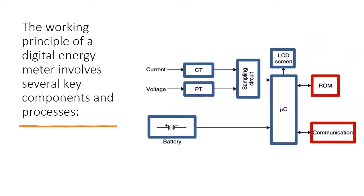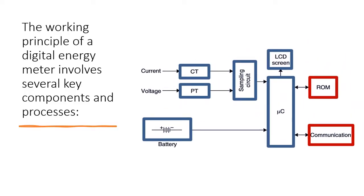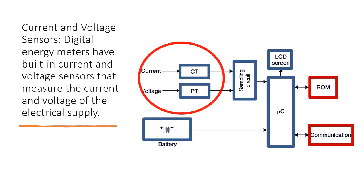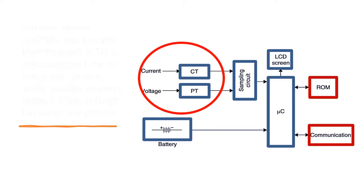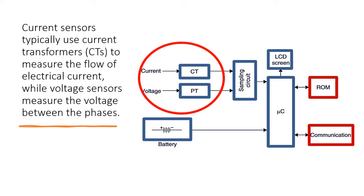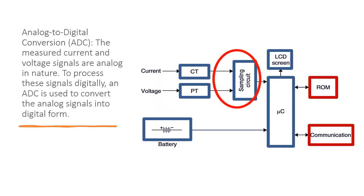The working principle of a digital energy meter involves several key components and processes. Digital energy meters have built-in current and voltage sensors that measure the current and voltage of the electrical supply. Current sensors typically use current transformers to measure the flow of electrical current, while voltage sensors measure the voltage between the phases.